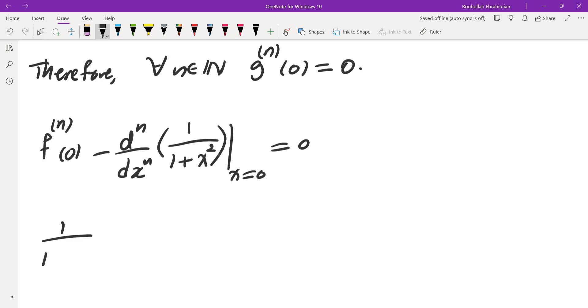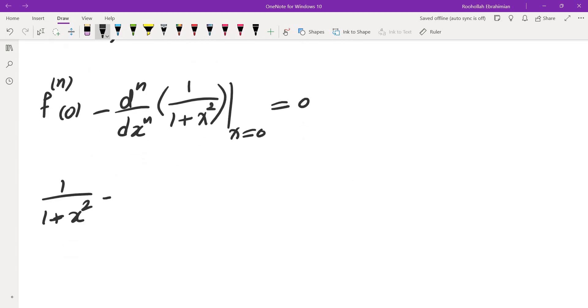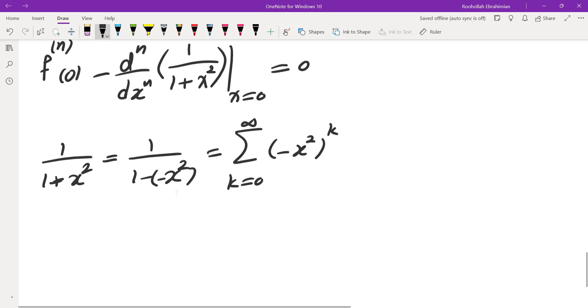If you look at this 1 over 1 plus x squared, we can find its nth derivative by looking at its power series. The Taylor series for this one is, since it's a geometric sum, we can write it down as the sum negative x squared to the power of k, k equals 0 to infinity. So that tells us, and this is for every x between negative 1 to 1.